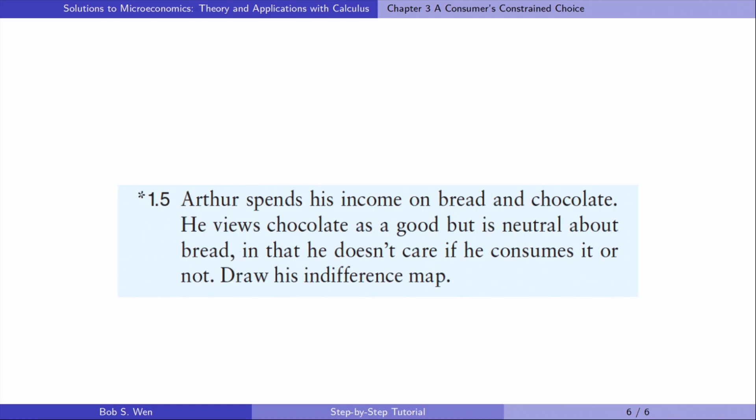Let's do exercise 1.5. Arthur spends his income on bread and chocolate. He views chocolate as a good but is neutral about bread, in that he doesn't care if he consumes it or not.